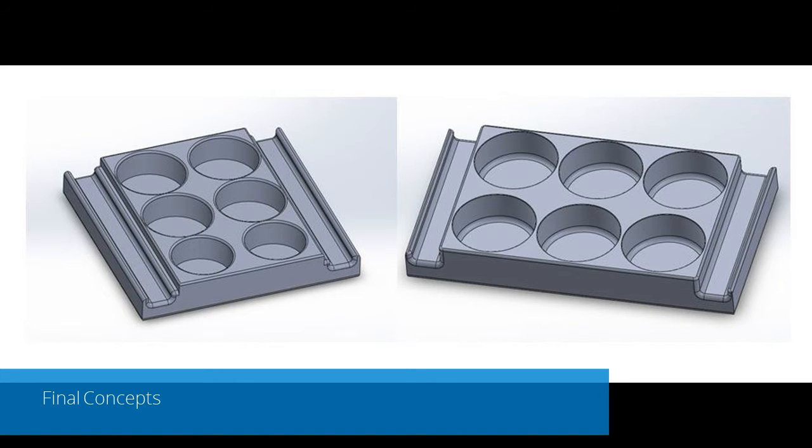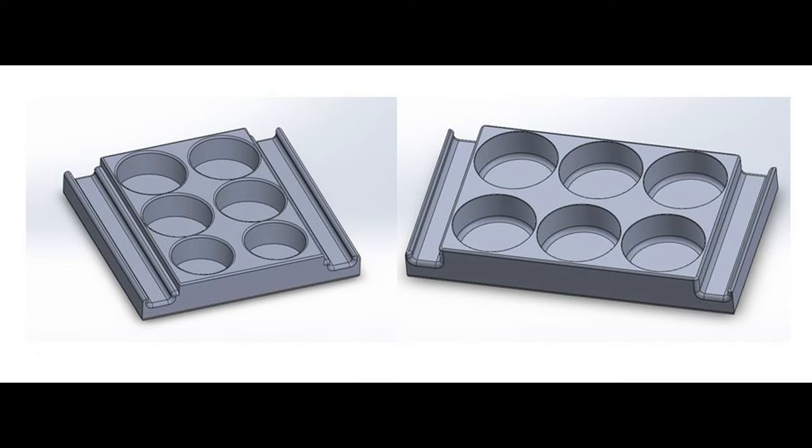In the end, I decided on the concept on the right, where the organizer allows space for six seasoner bottles and two kitchen tongs on either side. It is simple, functional, and stays within a reasonable amount of my class budget for printing. I printed this model using Fused Deposition Modeling, or FDM technology, and it works great.